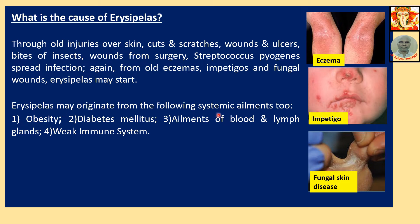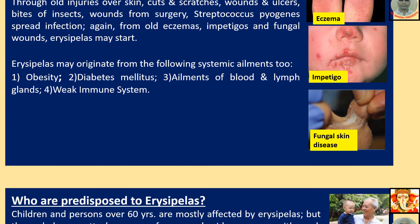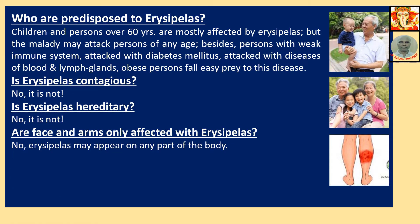Erysipelas may originate from the following systemic ailments: Number 1, obesity. Number 2, diabetes mellitus. Number 3, ailments of blood and lymph nodes. And a weak immune system. Children and persons over 60 years are mostly affected, but the malady may attack persons of any age. Persons with weak immune system, diabetes mellitus, diseases of blood and lymph glands, and obese persons fall easy prey to this disease.